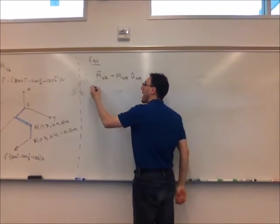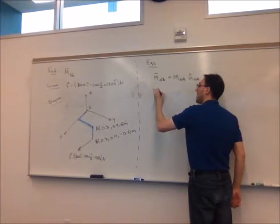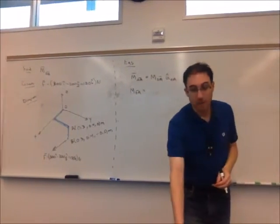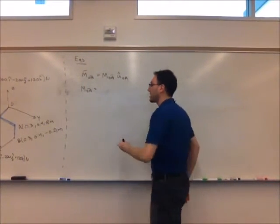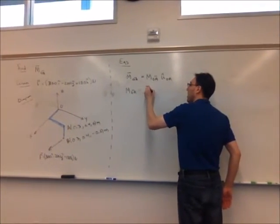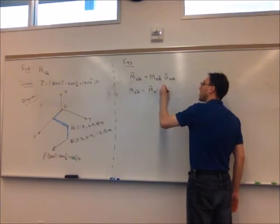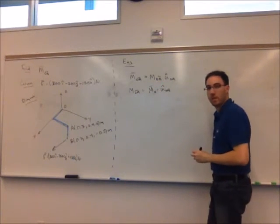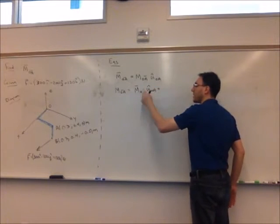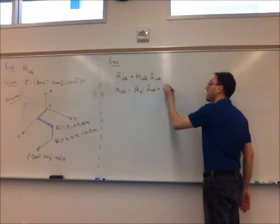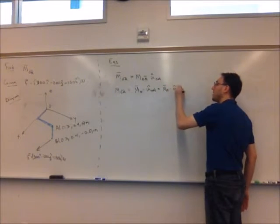But remember for moments about an axis, we can find the moment about an axis by taking the moment about any point on that axis. So we could use the moment around point O, for example, dotted with the direction of that axis. Alternatively, because we can use any point that lies on this axis, we could also use the moment around point A dotted with u hat OA.